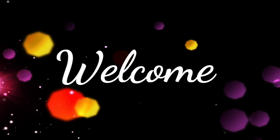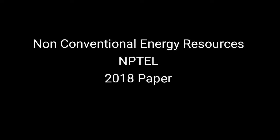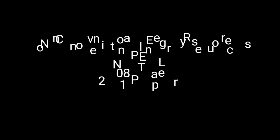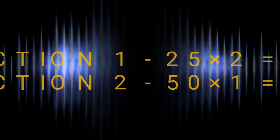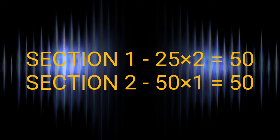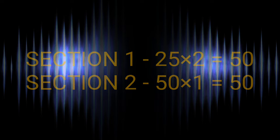Hello friends, welcome back. In this video we are going to discuss the previous year question paper of non-conventional energy resources and see the paper pattern. The paper is divided into two sections: Section A consists of 25 questions of two marks each, and Section B consists of 50 questions with one mark each. We are just taking a look at the questions asked, not going towards the answers.